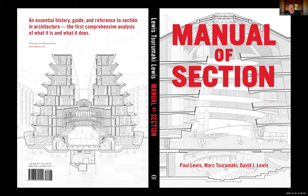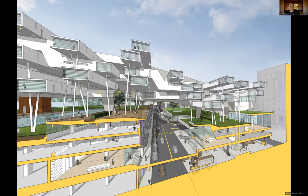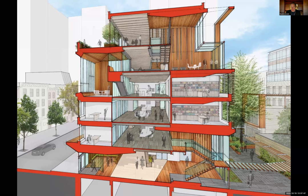What I thought would be most helpful is to give an overview of the Manual of Section, then focus on its impact on practice. The office LTL Architecture — Lewis and Tsurumaki Lewis — has been invested in the nature of section essentially since the founding of the firm, primarily through our interest in hybrid representation: digital and analog working together. We found that sections were the place where one could invest — drawing over digital, essentially clipping planes drawn through models — and therefore invent within the drawing to rapidly accelerate the design process, particularly for competitions.